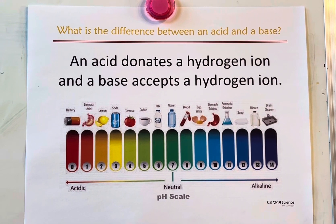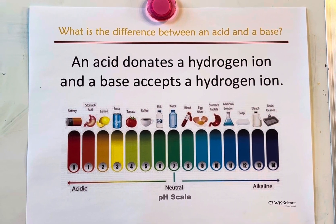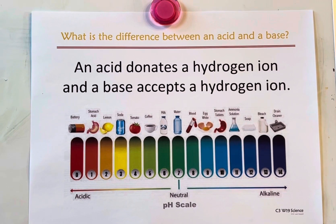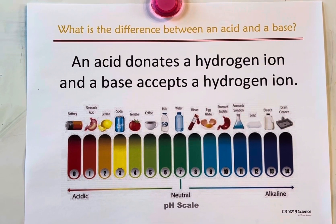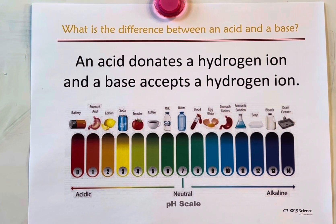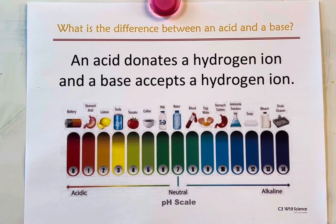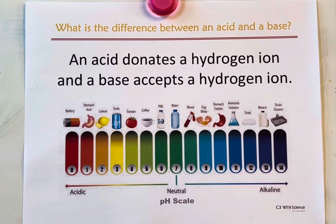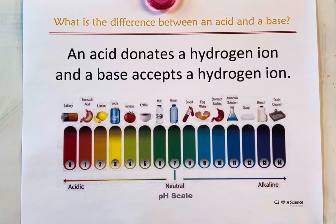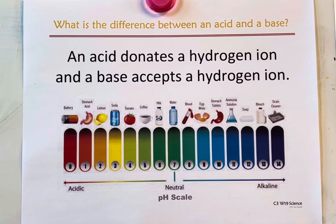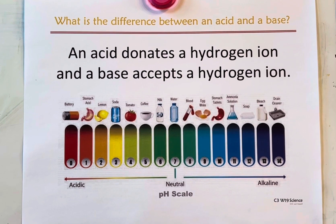This is Andemarie for CC Cycle 3 Week 19 Science. What's the difference between an acid and a base? We'll be singing this week's memory work to the song Ring of Fire by Johnny Cash.